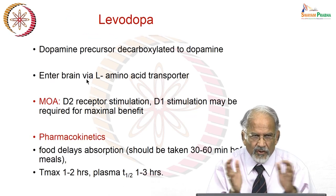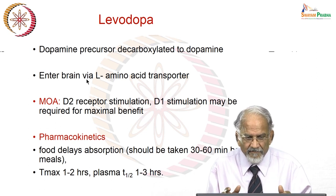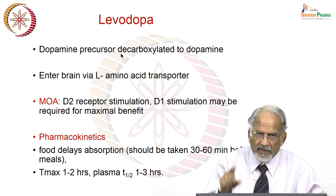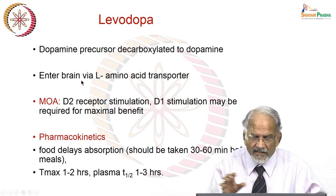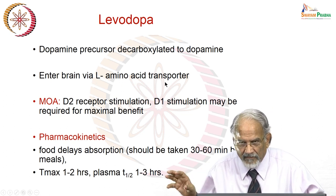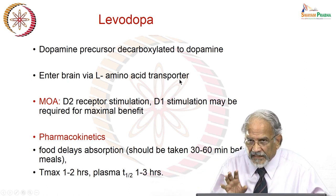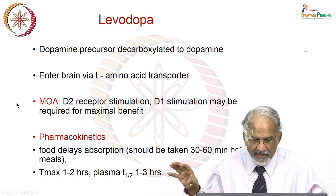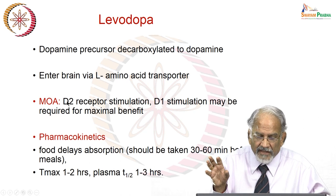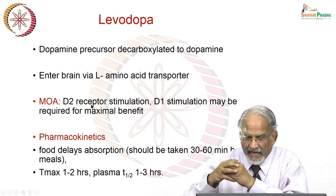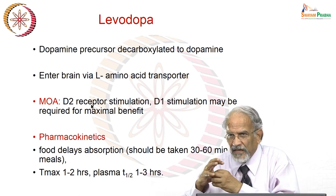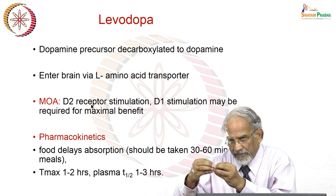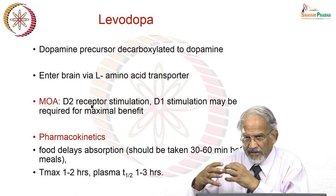Levodopa is the mainstay of Parkinson's treatment. It is a dopamine precursor, decarboxylated from levodopa to dopamine, and it enters the brain via the L-amino acid transporter — an active transport mechanism, not passive diffusion, which is why you sometimes get higher concentrations in the brain. The mechanism of action is that it stimulates dopamine D2 receptors and may also stimulate dopamine D1 receptors; activity at both receptors adds to the efficacy of the drug.